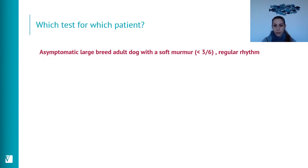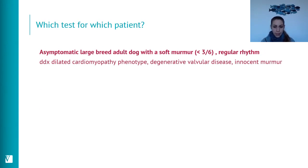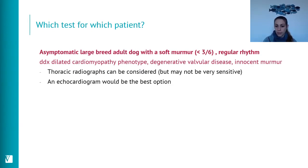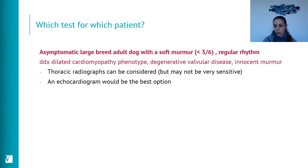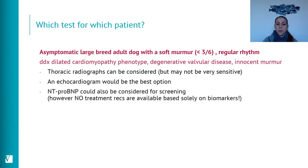Scenario 4: a large breed dog with a soft murmur. The primary differential is a dilated cardiomyopathy phenotype, though degenerative valvular disease and innocent murmurs are also possible. Thoracic radiographs help if cardiomegaly is present, but may appear normal in preclinical DCM. Echocardiography is the better option to detect systolic dysfunction requiring early treatment. NT-proBNP can be considered but there are no treatment recommendations based solely on biomarkers for DCM.